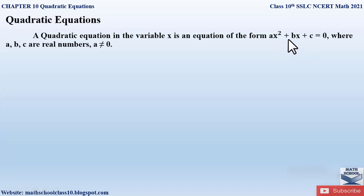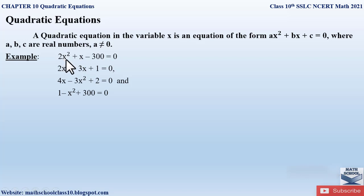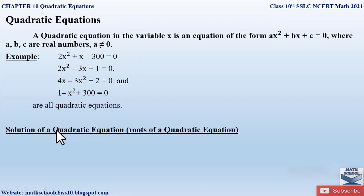For a quadratic equation, the highest degree should always be 2 — only then is it said to be a quadratic equation. This is very important to remember. These are some examples of quadratic equations; you can observe that the highest degree of x is 2 in each case. Only when the highest degree of x is 2 can we say it is a quadratic equation.